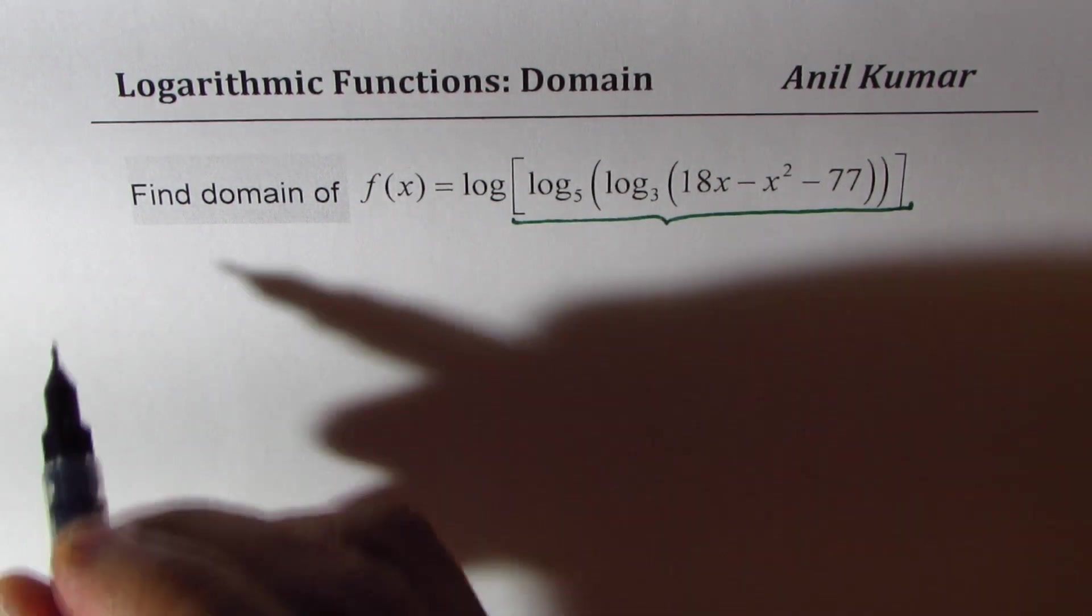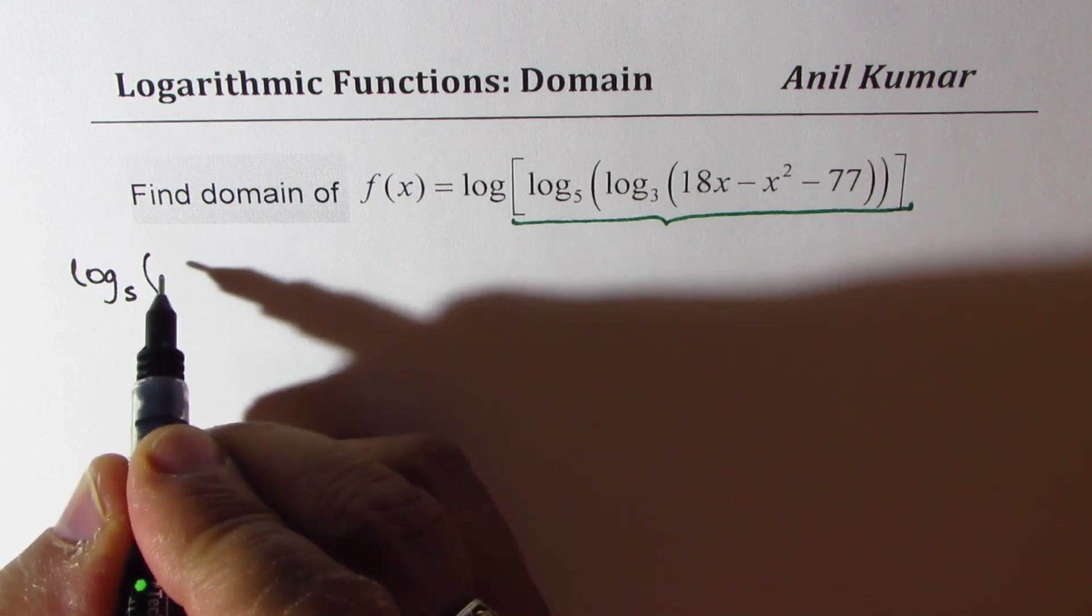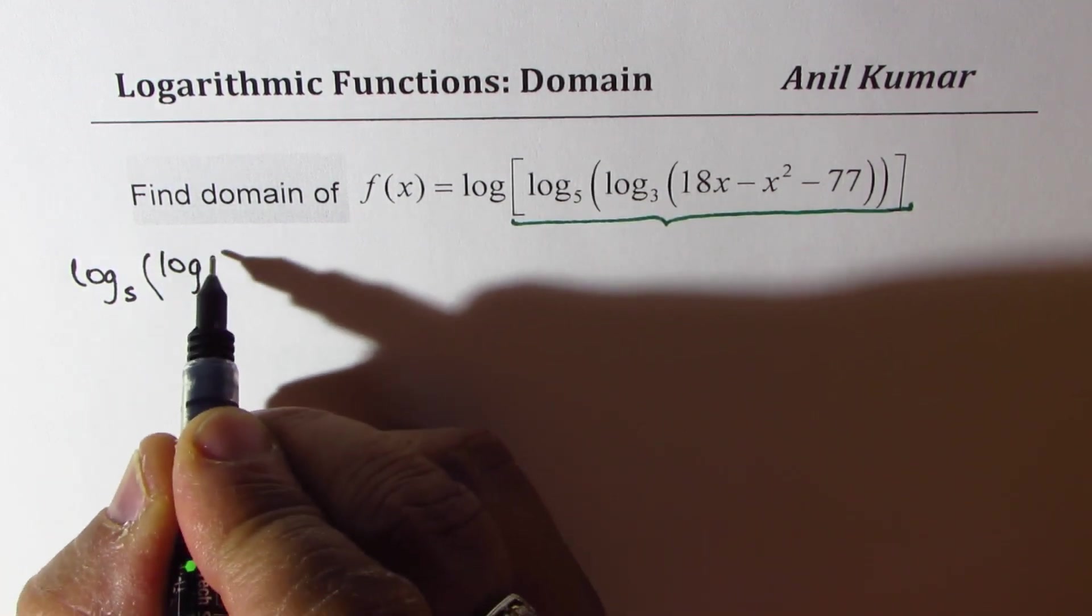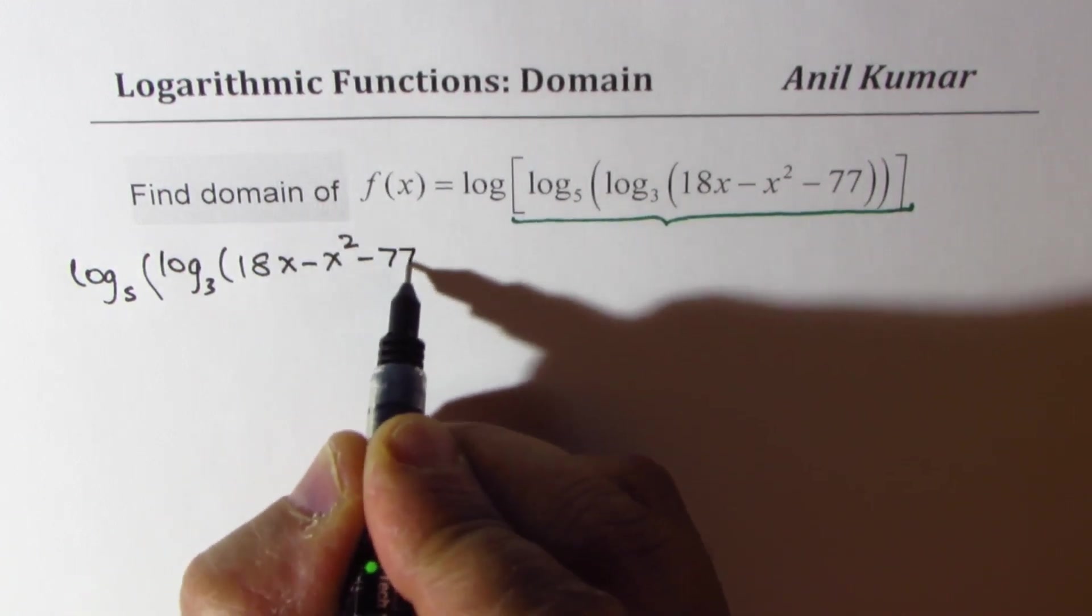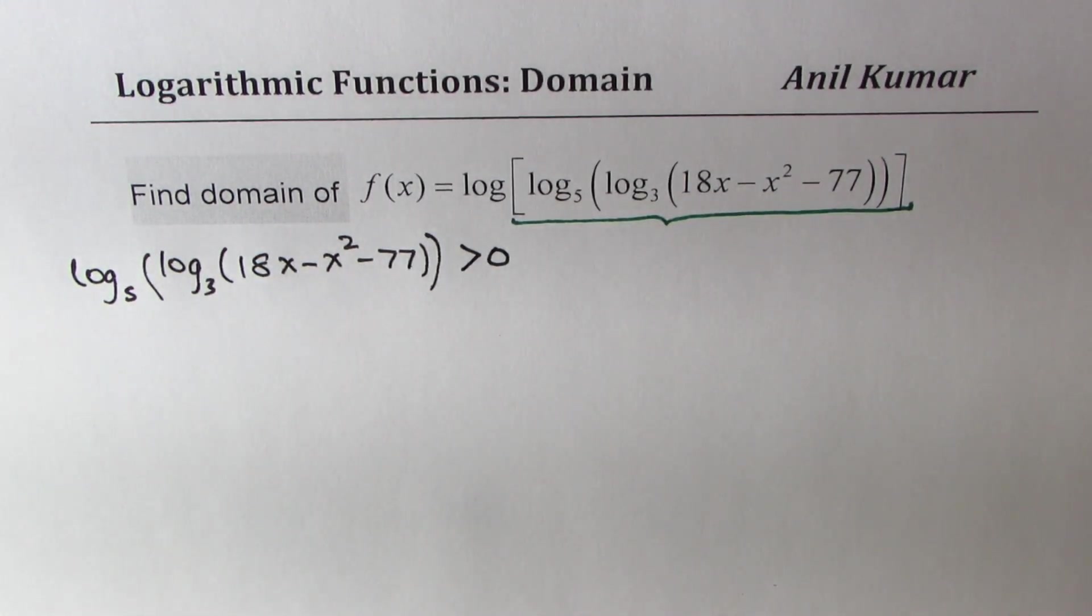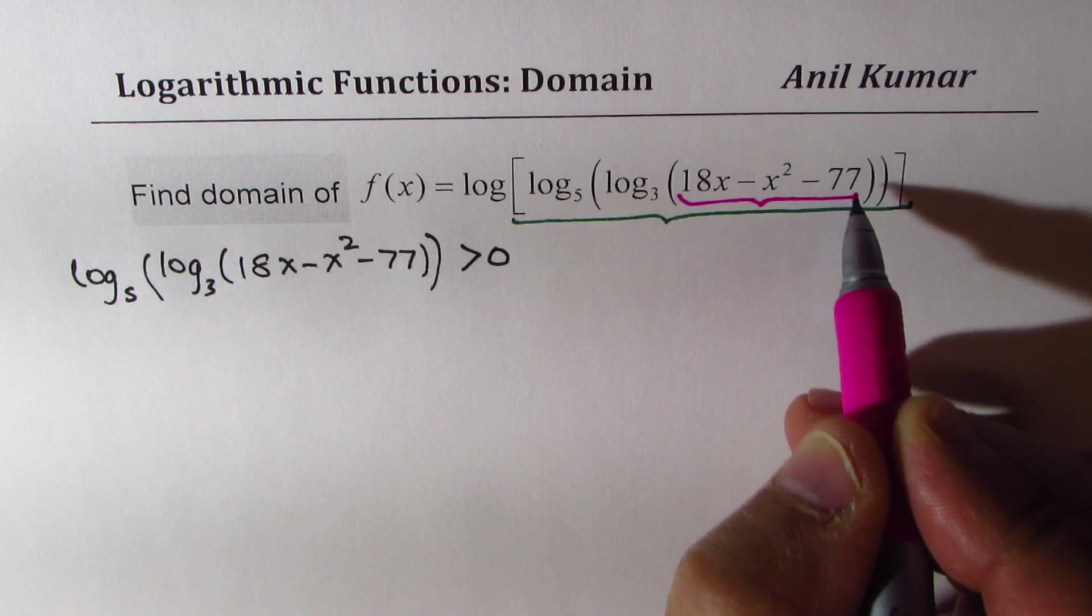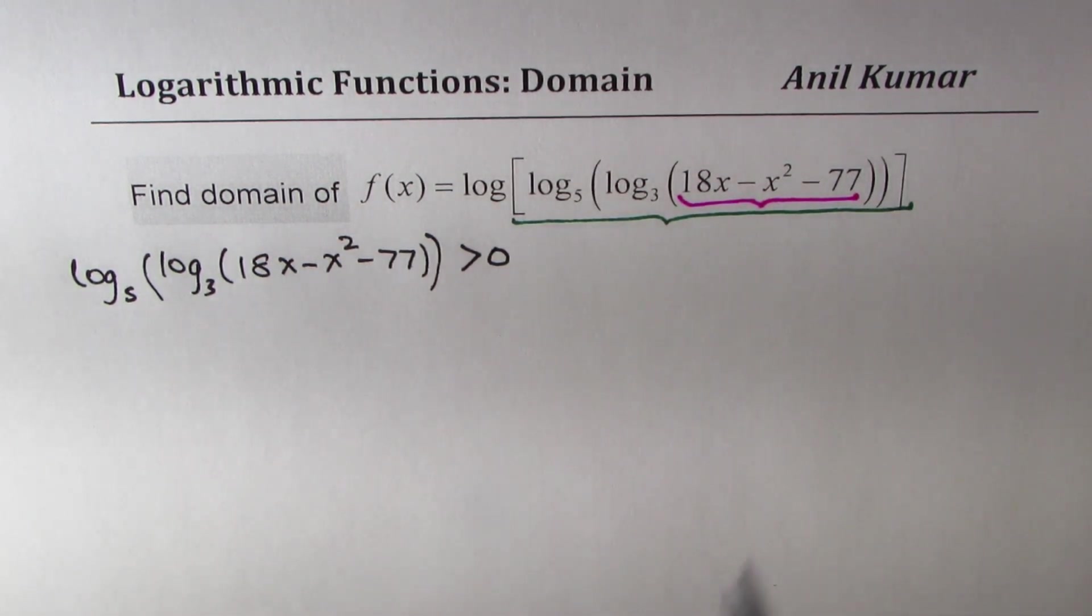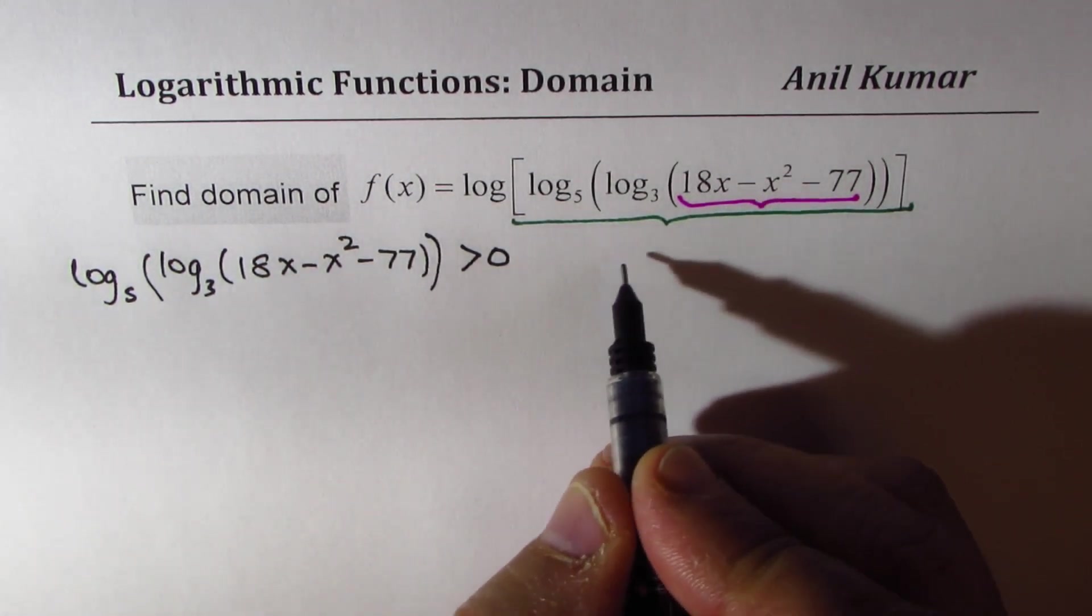So we have log base 5 of log base 3 of (18x - x² - 77), and all this should be greater than 0. This is one constraint. Now, as you move inside, you have another logarithm. That means even this quadratic function should be greater than 0. So that gives you the second constraint.